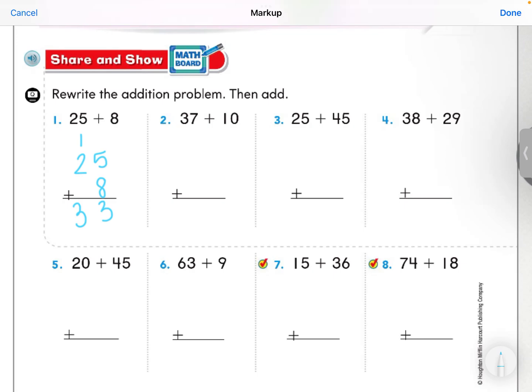I'm going to do the same thing for problems 2 through 8. I'm going to line up my tens and ones, and then I'm going to complete the addition sentence. 37 plus 10, I'm going to line up my tens and my ones. 7 plus 0, 7. 3 tens plus 1 ten, 4 tens. So my answer would be 47.